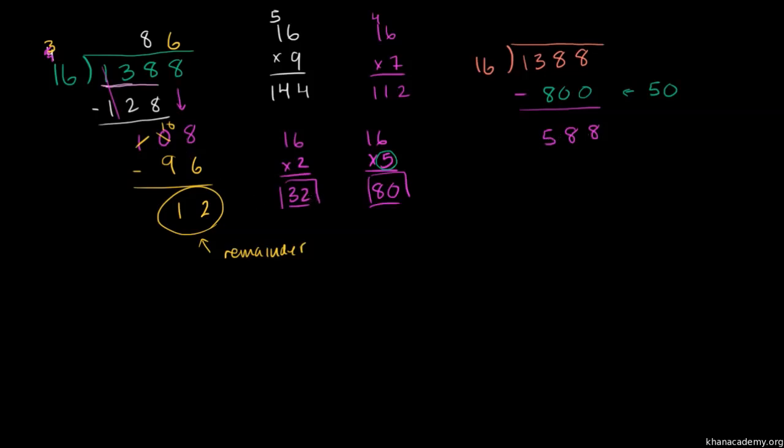So we know that 16 times 2 is 32. So 16 times 20 is going to be 320. I just multiplied the 2 times 10, which would give us our product times 10. And so we can subtract this right over here. 8 minus 0 is 8, 8 minus 2 is 6, and then 5 minus 3 is 2. So now I'm left with 268.